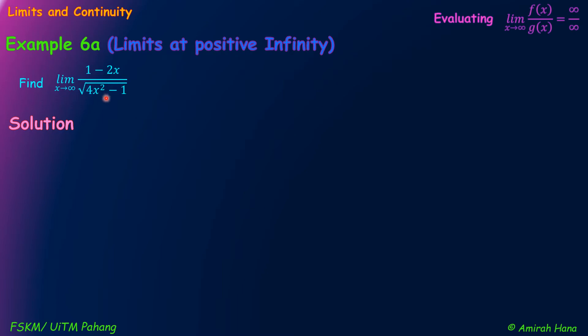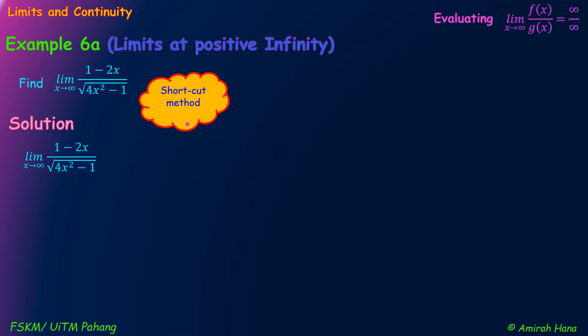Since we cannot use direct substitution, and this is an infinity limit, we can solve using the shortcut method. From the given question, when we apply the shortcut method, we must choose the term containing the highest power of x in the numerator and the term containing the highest power of x in the denominator. So we can write it like this.